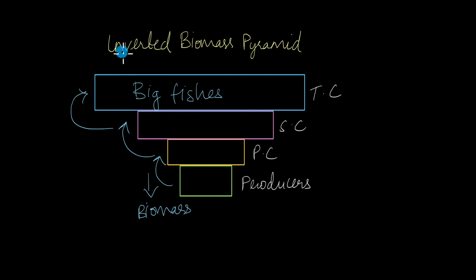So this is a type of an inverted biomass pyramid. Now, we've talked for quite some time about the types of ecological pyramids, but there are a lot of shortcomings of these ecological pyramids.